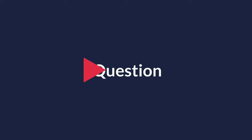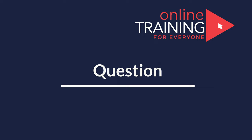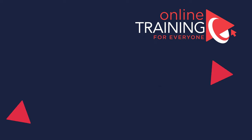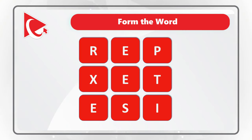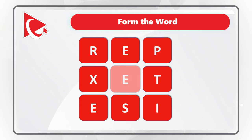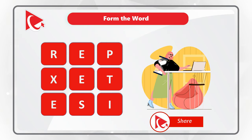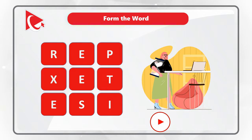Very frequently you might get tested on how quickly you can form words using letters of the English alphabet. In our case you're presented with nine letters and you need to form a word using all the letters only once. The letters are R, E, P, X, E, T, E, S, I. Do you see the word? Give yourself 10 to 15 seconds to see if you can answer the question.